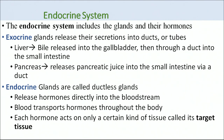There is a basic difference between exocrine and endocrine glands. Exocrine glands release their secretion into ducts or tubes. For example, the liver is an exocrine gland — it secretes bile that is released into the gallbladder and then through a duct into the small intestine. The pancreas similarly releases pancreatic juice into the small intestine through a duct.